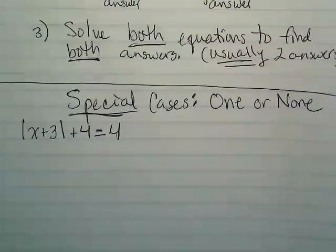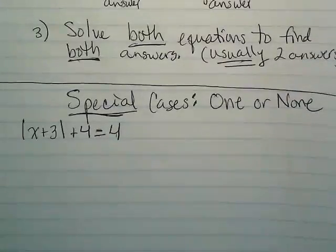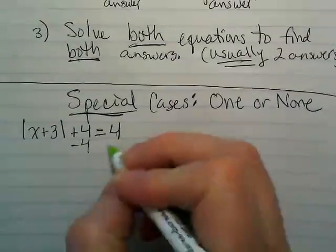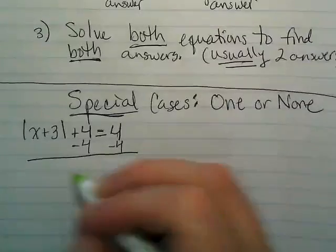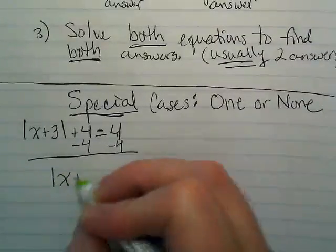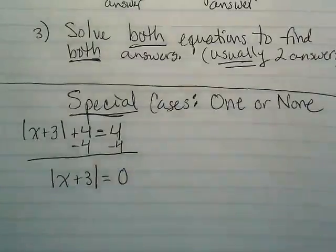Can you look ahead at what's going to happen with this problem? It's going to be equal to zero after I start simplifying, isn't it? So if I subtract four from both sides, that leaves me the absolute value of x plus three is equal to zero.